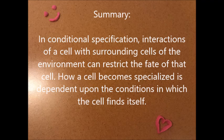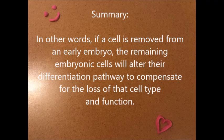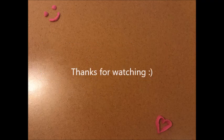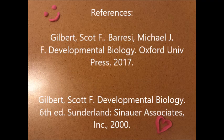In conditional specification, interactions of a cell with surrounding cells of the environment can restrict the fate of that cell. How a cell becomes specialized is dependent upon the conditions in which the cell finds itself. In other words, if a cell is removed from an early embryo, the remaining embryonic cells will alter their differentiation pathway to compensate for the loss of that cell type and function.